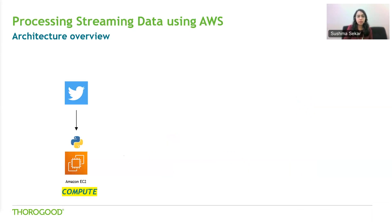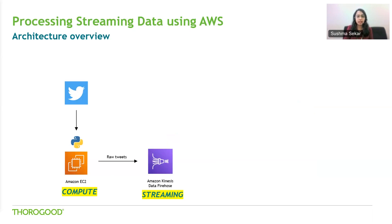There are some filters on the tweets, such as language — we've filtered for tweets in English. The script looks for keywords related to Oscars, NFL, the Super Bowl, and COVID in the tweet message. We're collecting tweets related to Oscars and NFL from across the world, and for COVID we've added a location filter, capturing tweets from the UK and the US only. The Python script then adds the raw tweets to the Amazon Kinesis Firehose Delivery Stream.